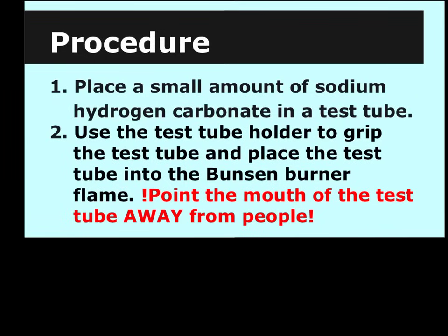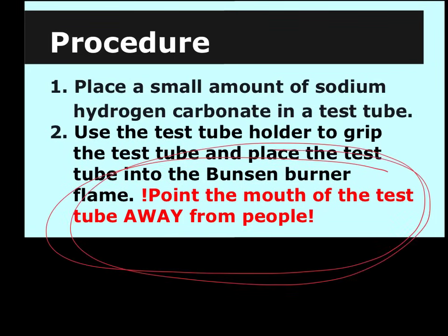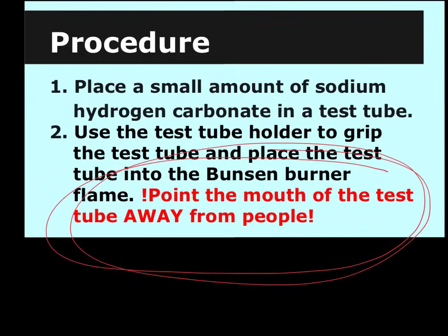In this procedure, you're going to put some of the sodium hydrogen carbonate into the test tube. And then you're going to use the test tube holder to grip the test tube. And you're going to put the bottom of the test tube actually into the flame of the Bunsen burner. Now, this is very important. That's why it's in red. This is a very important safety measure here. You're going to make sure that the mouth of the test tube is pointed away from people, from yourself, from your lab partner, from me, and from Mr. Hunt. We don't want anybody to get injured. And I don't think that anything would happen, but it's just good safety in the lab.